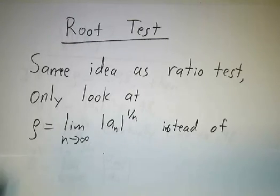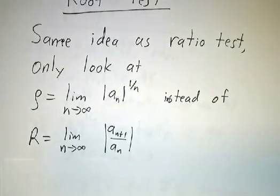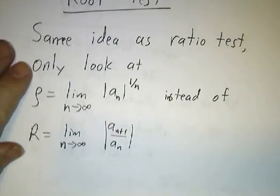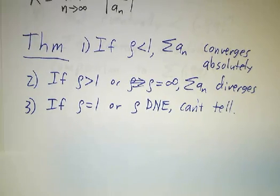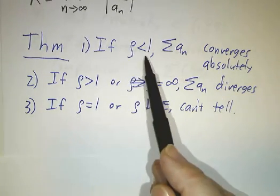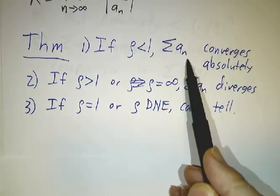We take the limit of that guy instead of the limit of the ratios, and then the theorem reads just like the theorem for the ratio test. If this limit is less than one, our sum converges absolutely.